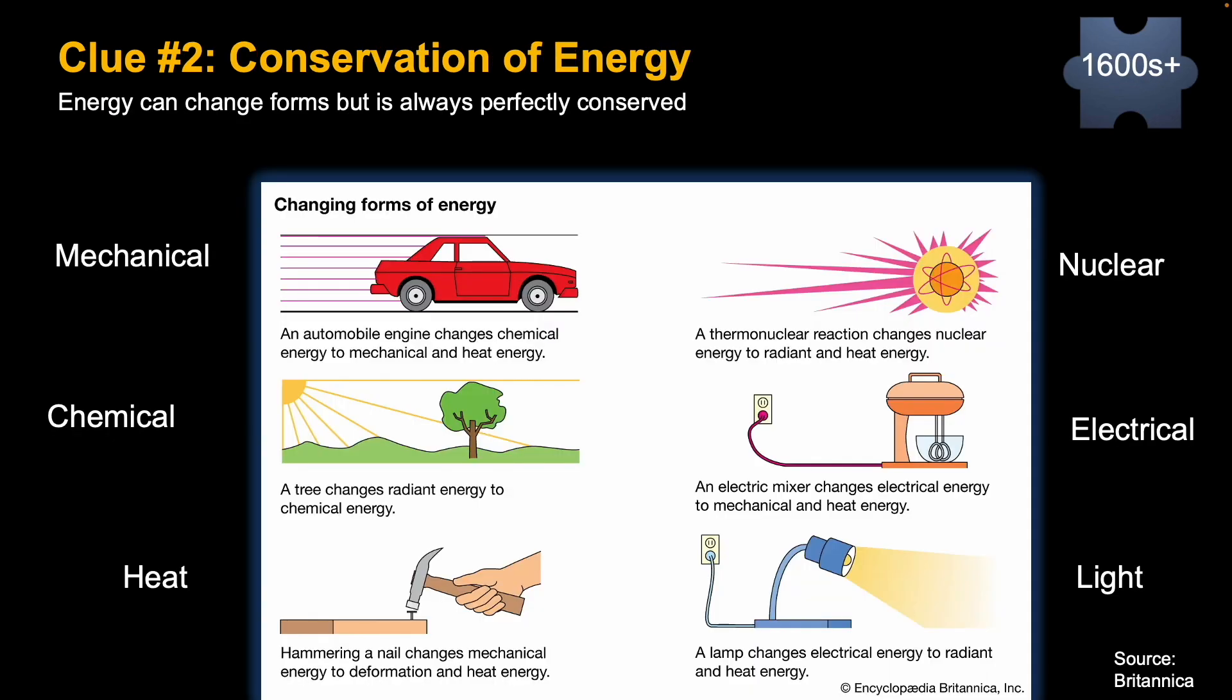Since then, a number of different types of energy beyond just gravitational energy have been found to be conserved, meaning that energy can transfer forms but it cannot be created or destroyed—it will be equal. For example, an automobile changes chemical energy from gasoline into mechanical energy. A lamp changes electrical energy into light, and there's some excess heat as well, but you total everything up and it should always be equal.